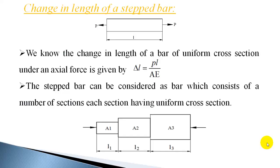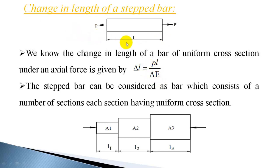In the previous class we studied the change in length of a bar of uniform cross section under the action of axial loading as δL = PL/AE. When it is subjected to an axial loading — either axial pull or axial compressive force — the length will increase or decrease by PL/AE, where P is the axial force, L is the length of the bar, A is the area of cross section, and E is the Young's modulus.